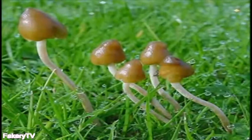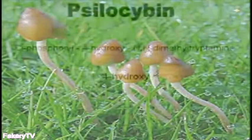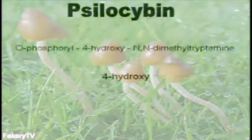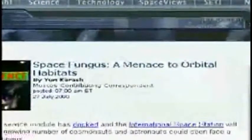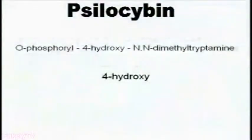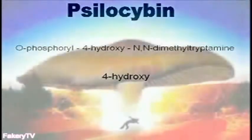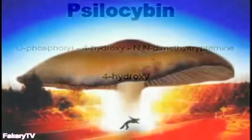One of Terence McKenna's discoveries is that psilocybin mushrooms contain something not found anywhere else in the plant or animal kingdom: the 4-hydroxy compound. Interestingly, mushroom spores are among the only things that can survive in space without any machinery. We can recall the Russian space station Mir being shut down due to space mold. So we have this alien substance in a fungus that can survive space and reentry — the only place 4-hydroxy is found — prompting the idea that mushrooms themselves may be the aliens we seek, a notion supported by Strassman's laboratory replication of the alien abduction experience.